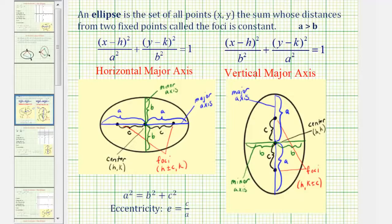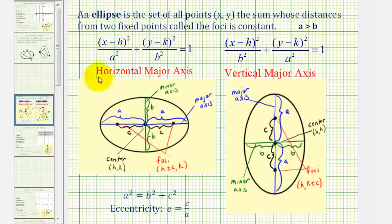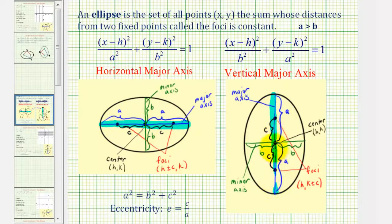Now let's review the standard equation of an ellipse. Every ellipse has two axes: a major axis and a minor axis. The major axis is the longer axis, which can be horizontal or vertical, and the same is true for the minor axis.